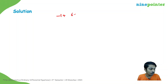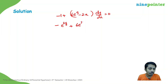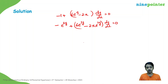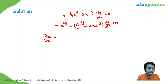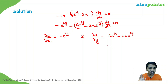Multiplying the differential equation −1 + 6e^(y−2x)·dy/dx = 0 by e^(2y), we get −e^(2y) + 6e^(3y−2x)·dy/dx = 0. This is now exact, so there exists a function u(x, y) such that ∂u/∂x = −e^(2y) and ∂u/∂y = 6e^(3y) − 2x·e^(2y). The solution is u(x, y) = c.